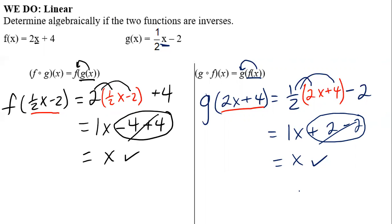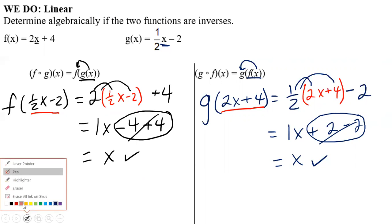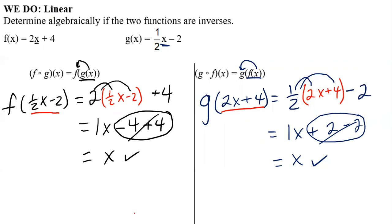Since both of them equal x, that means that these two functions are inverses. The conclusion is that f of x and g of x are inverses.